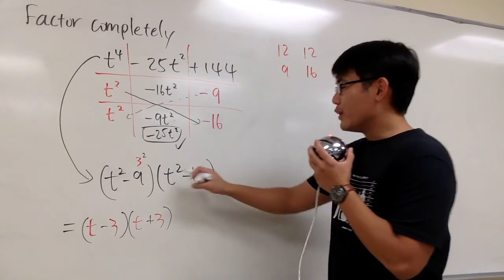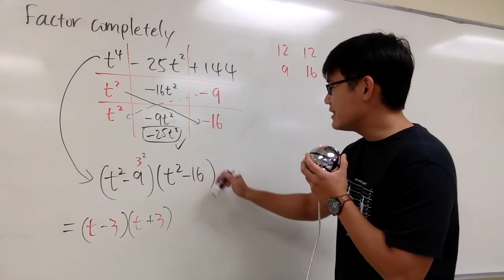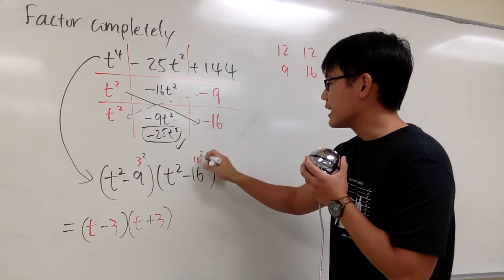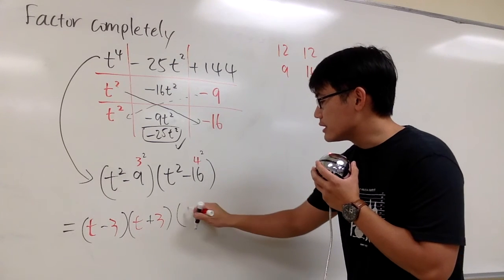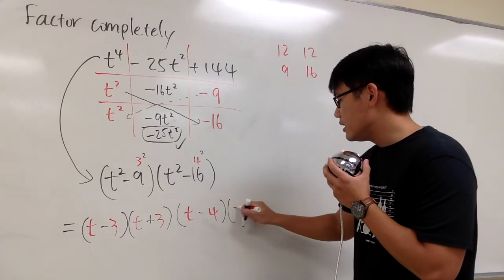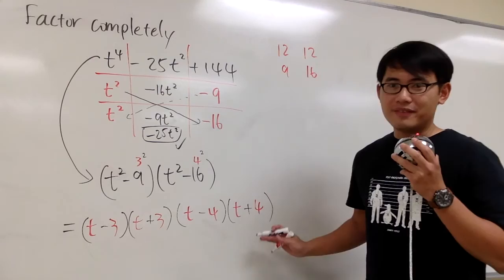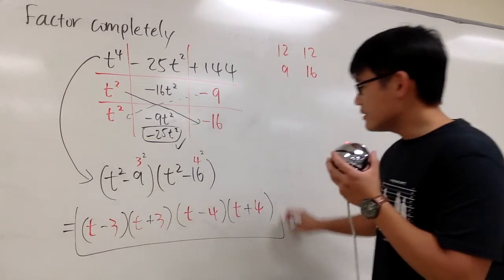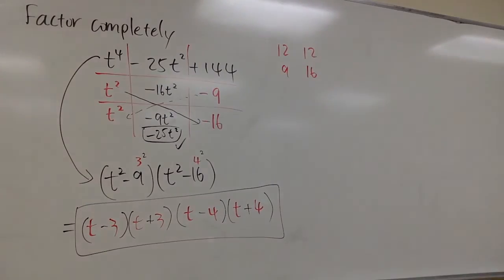How about this? We have t squared minus 16. Can we also factor this out? Yes, we can. Because the 16 is the same as 4 to the second power. So, t squared minus 4 squared, we will end up with t minus 4 times t plus 4. And this right here will be the final result. This is the factoring for that. That's all. So, let's go.